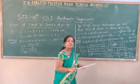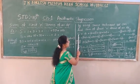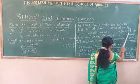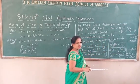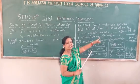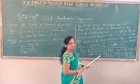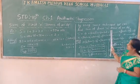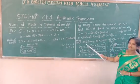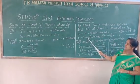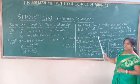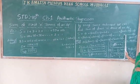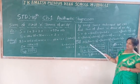And the same sum, I have to write in reverse order. So the last term a plus n minus 1 into d comes first, then a plus n minus 2 into d, and we write in decreasing order until the last class term becomes a. We call this equation number 2.